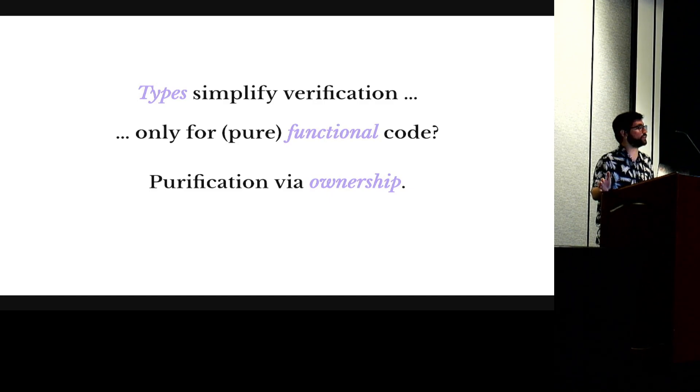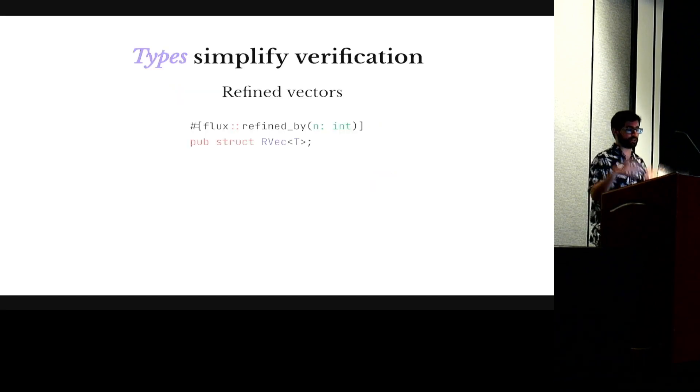Okay, so I hope I convinced you that we can make refinements and imperative updates co-exist in Rust by leveraging the ownership mechanisms. I guess I still have to convince you that this makes verification easier. So for that I'm going to show you a bit more complex example by means of a refined vectors API.